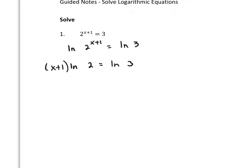Now, ln 2 is just a number. However, let's distribute the ln 2 and get rid of the parentheses. That would be x ln 2 plus ln 2 times 1, which is ln 2, equals ln 3.